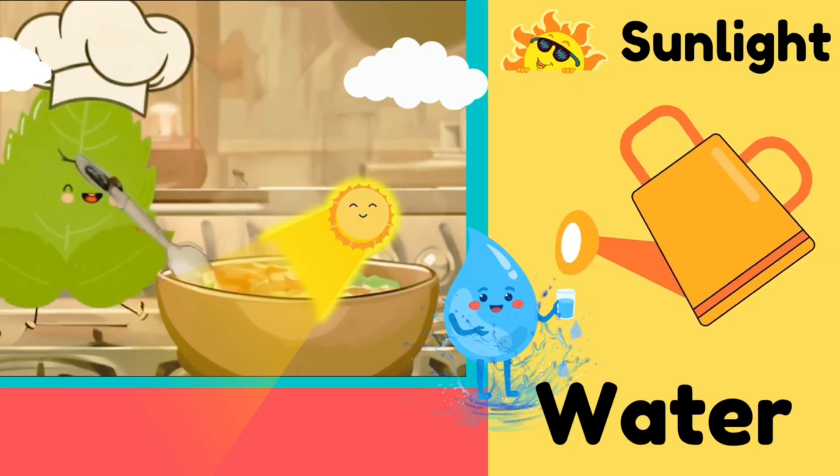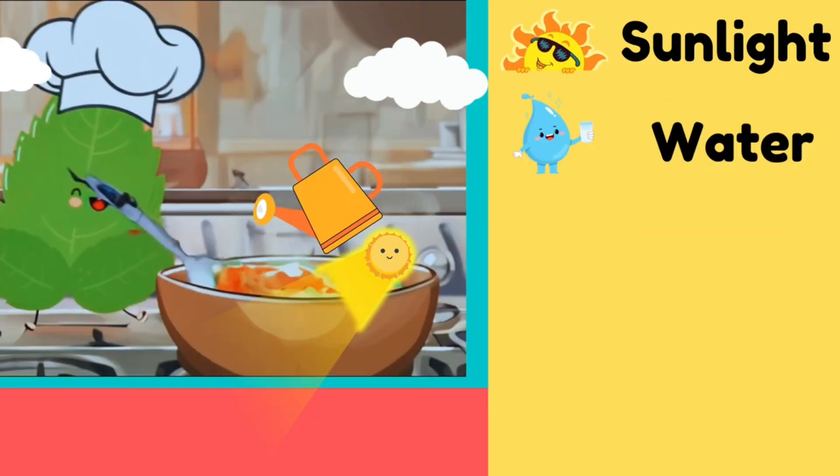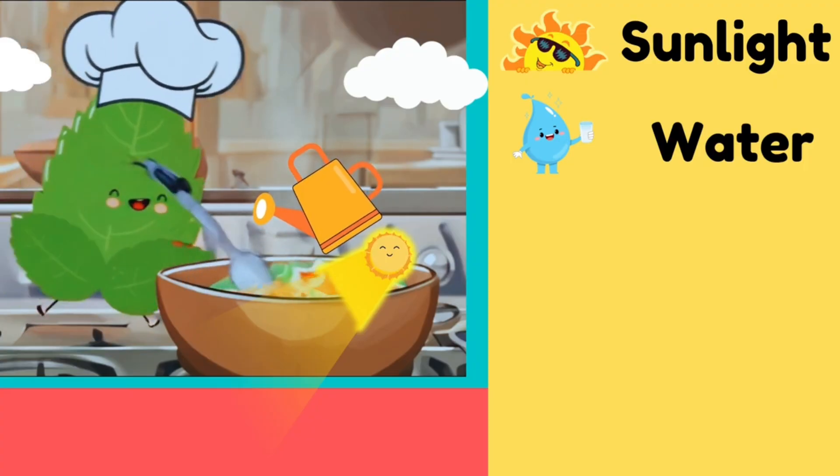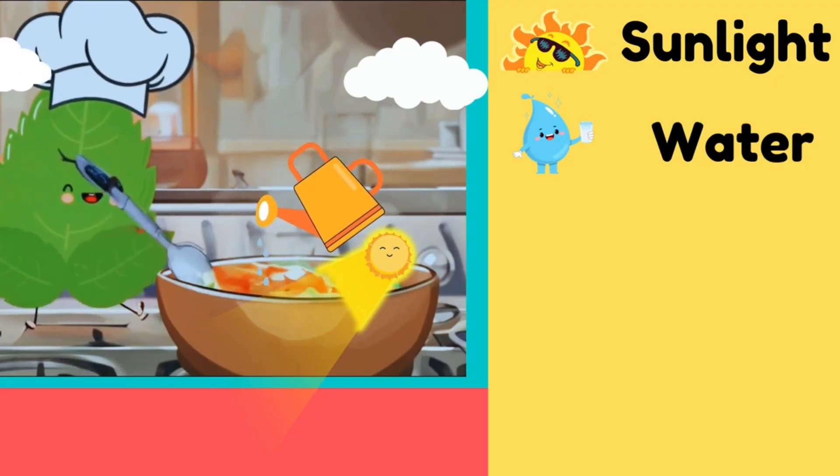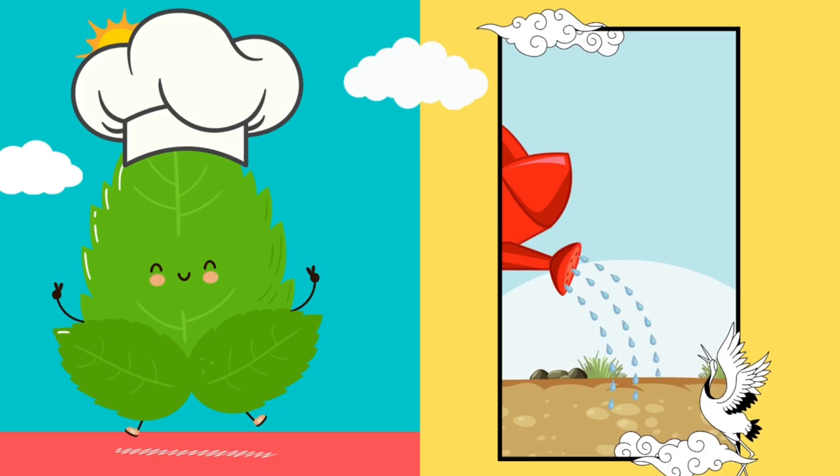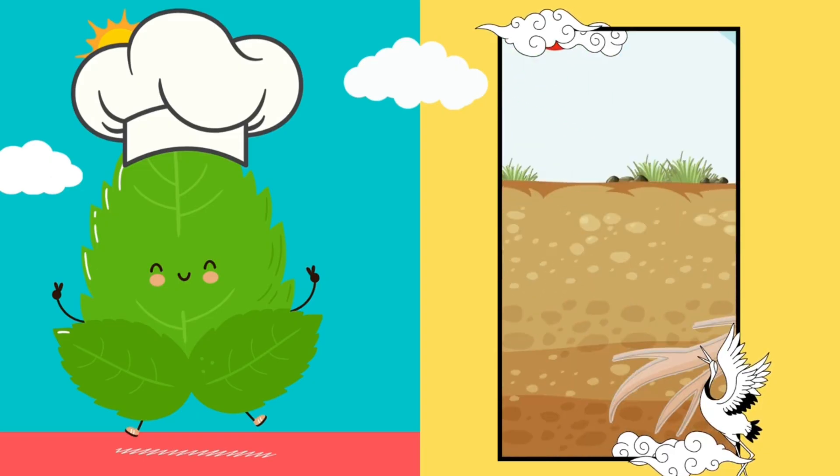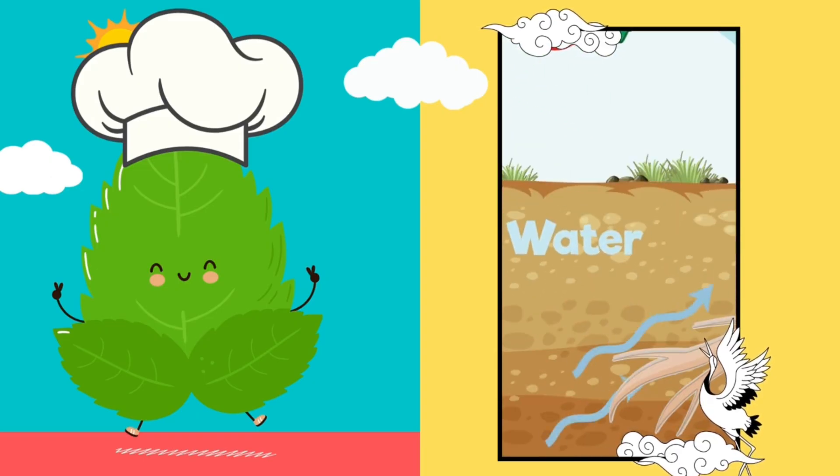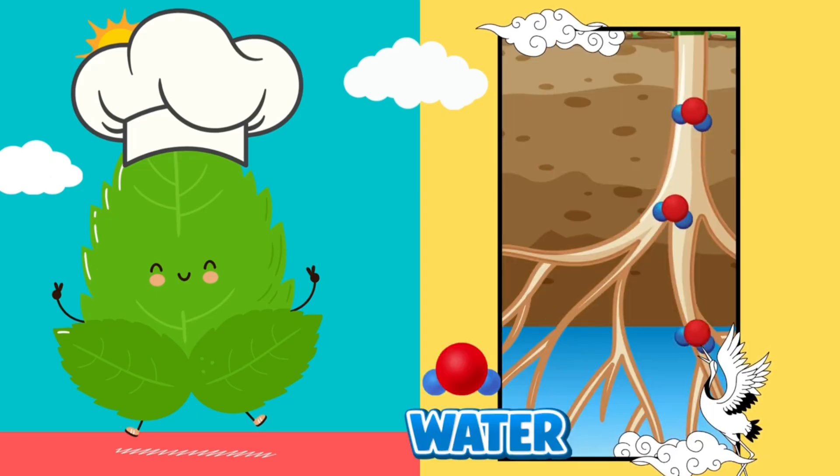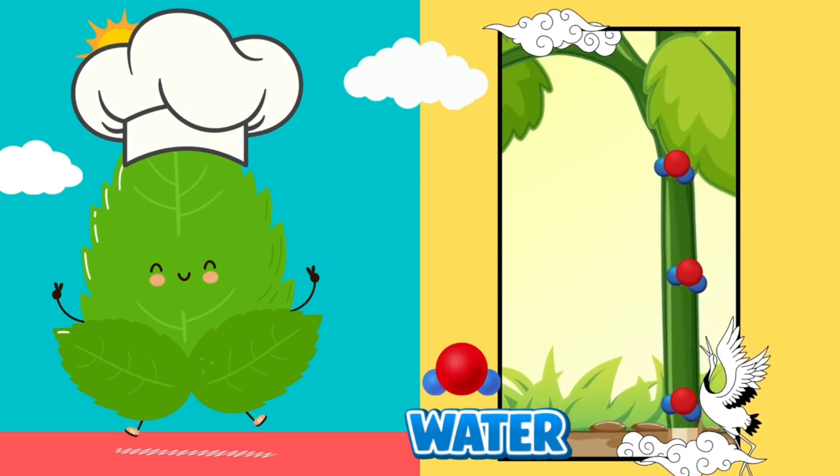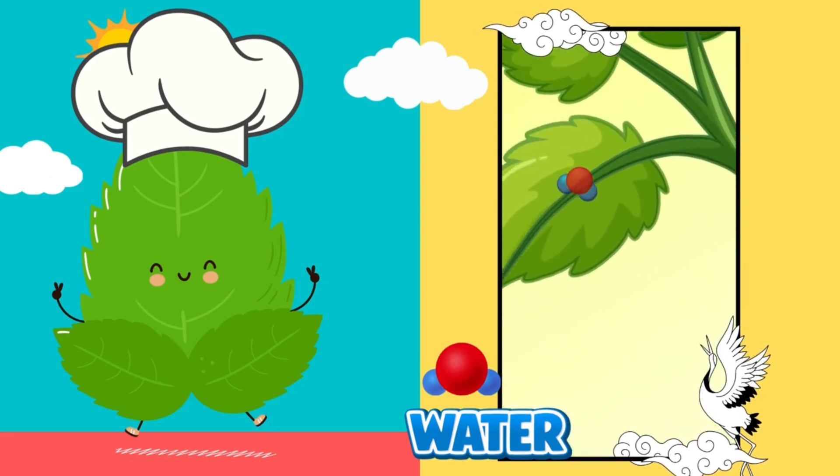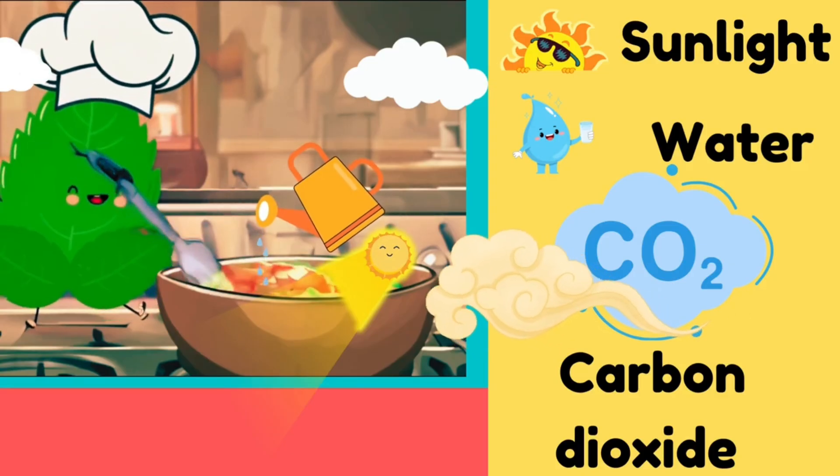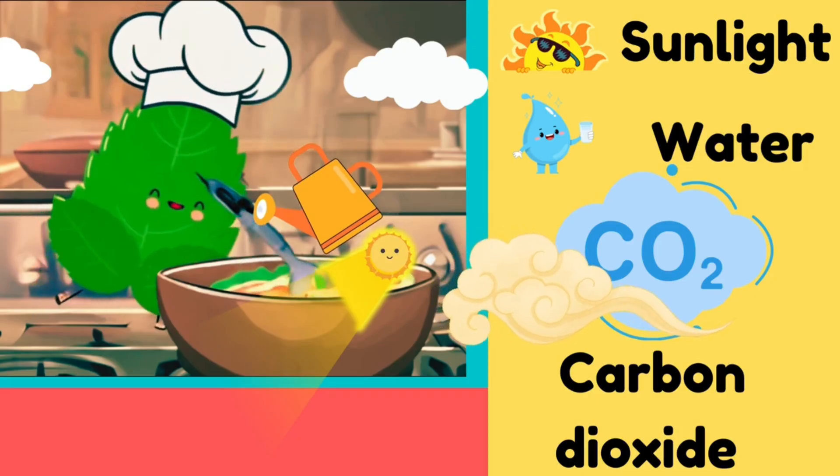Two, water. Water absorbed by the roots from the soil. The water travels up through thin tubes called veins. Veins carry water and minerals to the leaves. Three, carbon dioxide.